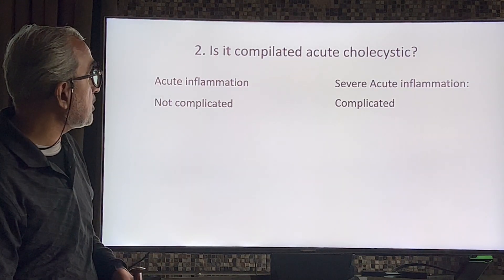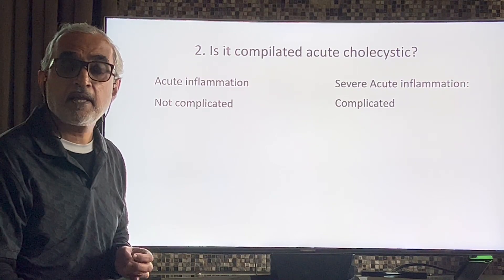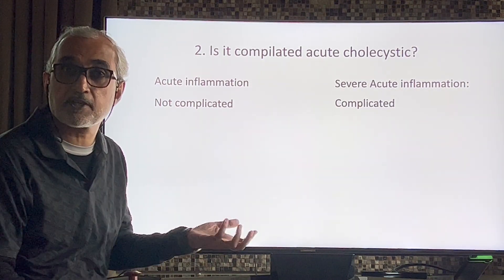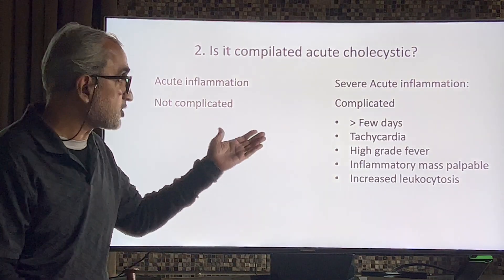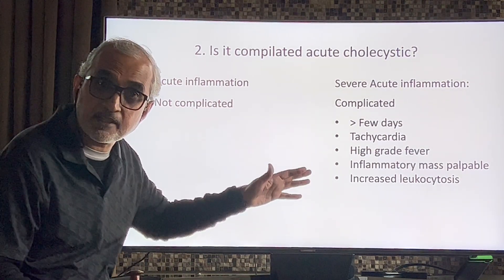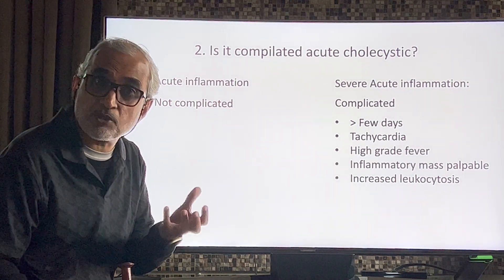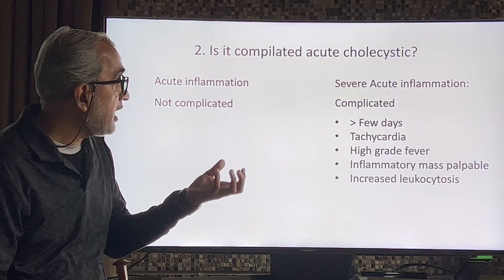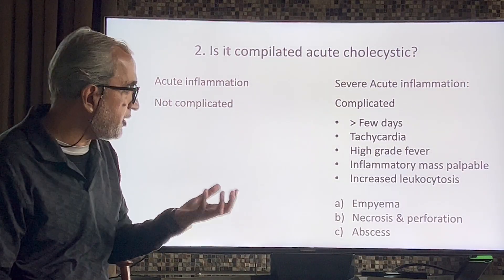The question is: is it complicated acute cholecystitis or not? In complicated cholecystitis, the inflammation is severe. If after several days the pain is not subsiding, tenderness is increasing, tachycardia is persisting and worsening, fever is persisting and worsening, and a mass is felt in the region, this indicates a complication such as empyema, necrosis, perforation of the gallbladder wall, inflammatory mass, or abscesses.